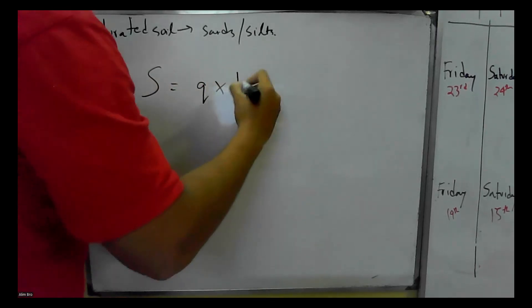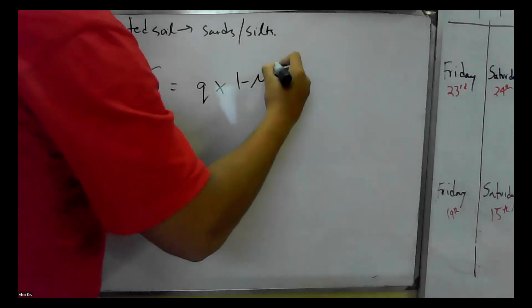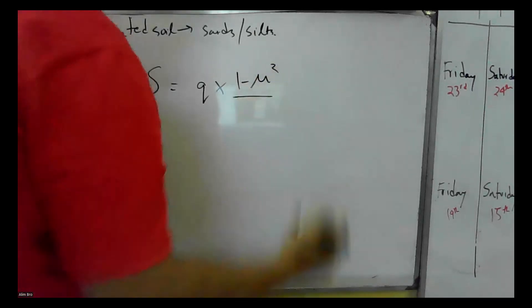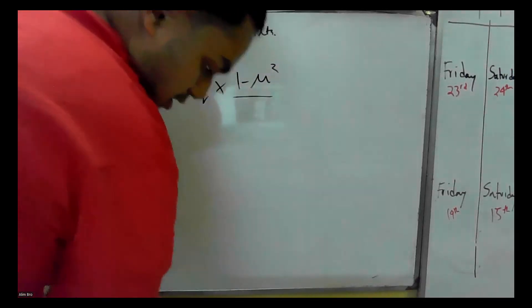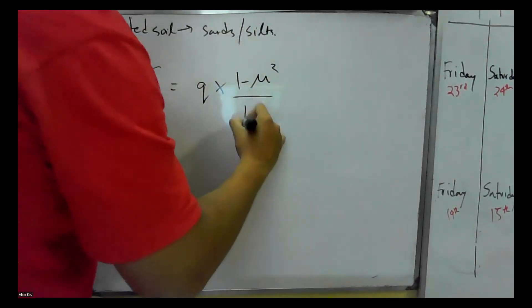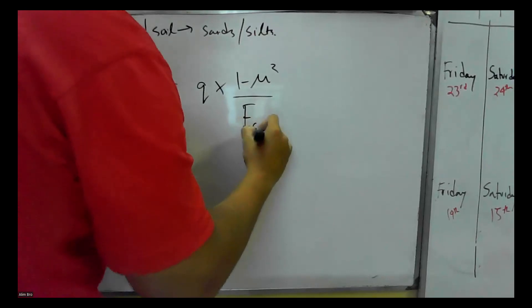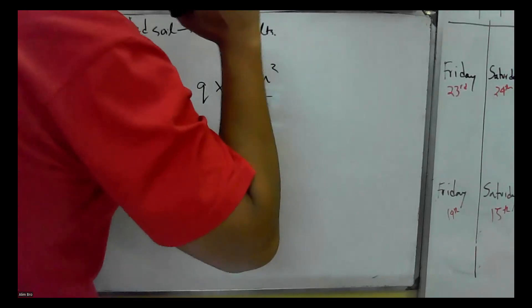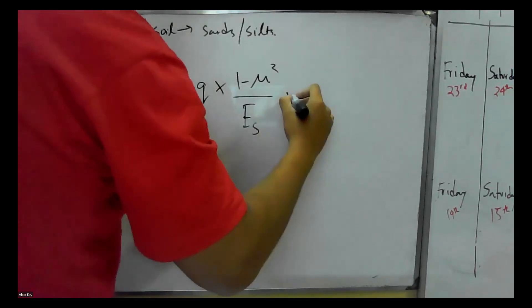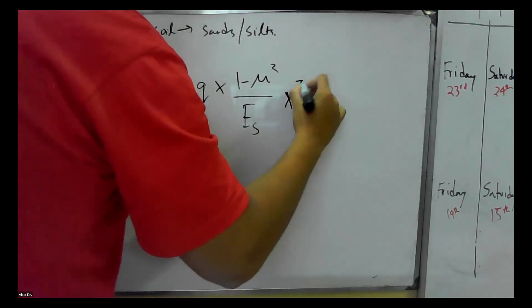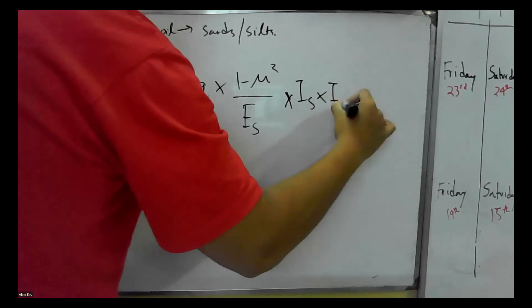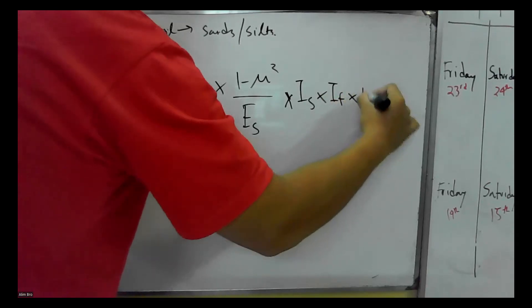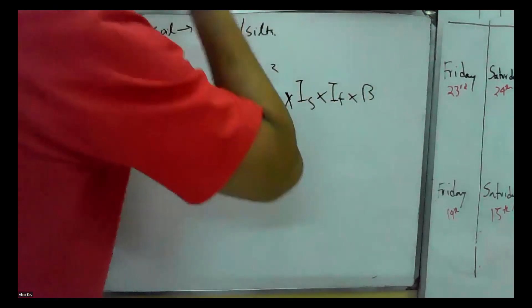The formula is: Q times (1 minus mu squared), divided by Es, into Is, into B.